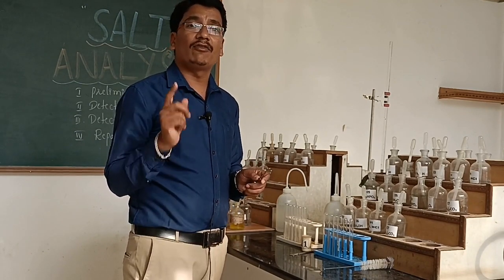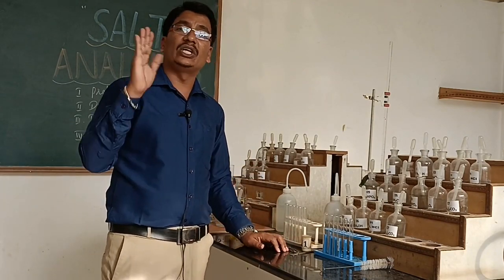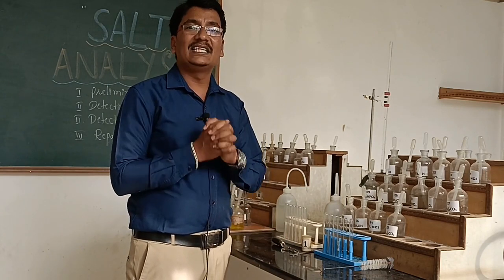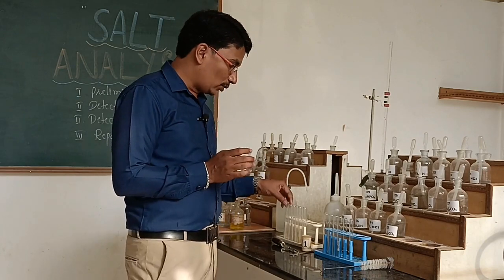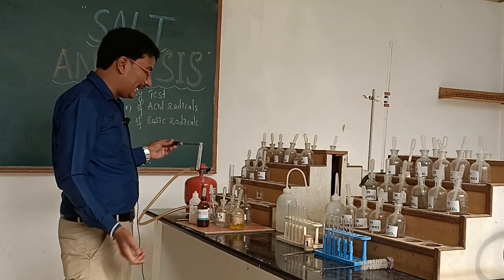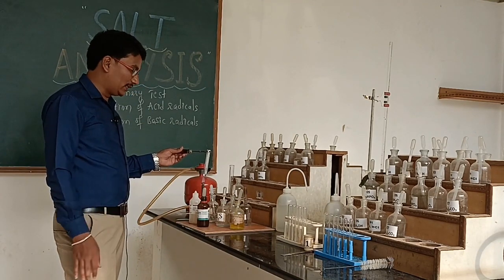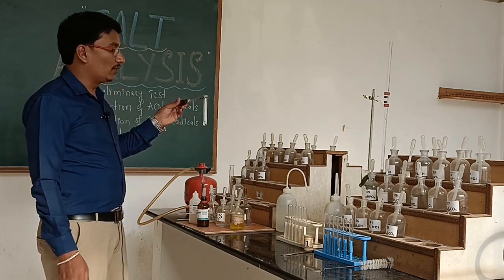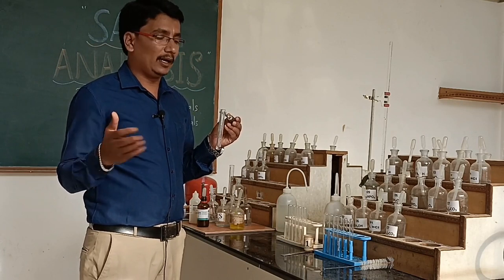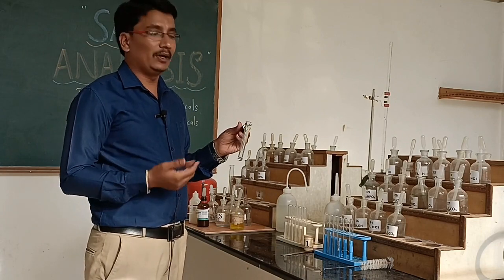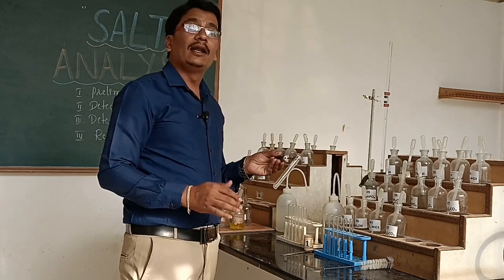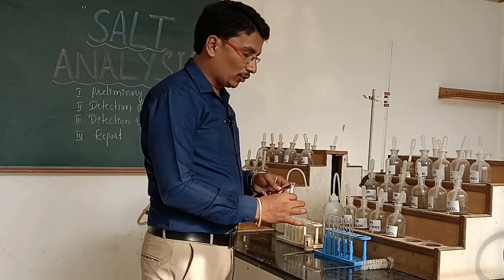Now we move on to the detection of the basic radical. In basic radicals, we observe six groups and one zero group. We begin with the test for the zero group cation, which contains the ammonium ion. The group reagent test is: salt plus dilute NaOH, then heat and boil the solution. We observe the smell of ammonia, which indicates that the given salt contains ammonium ion.